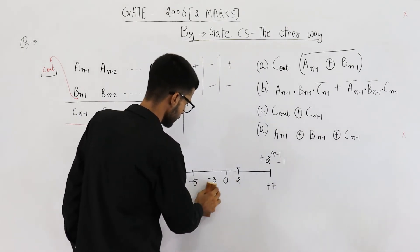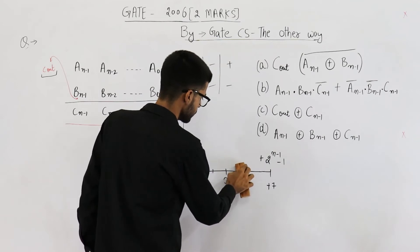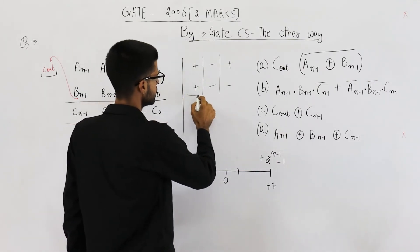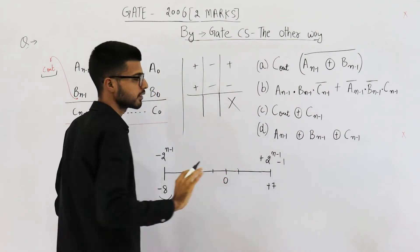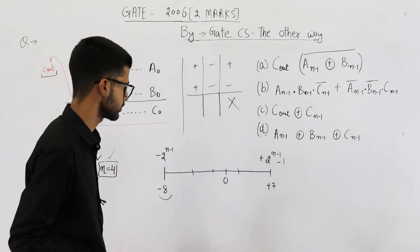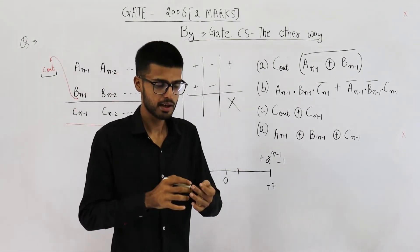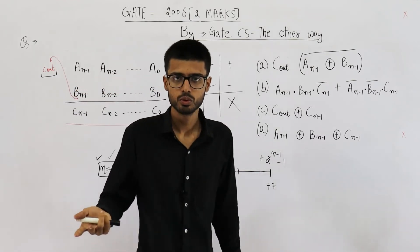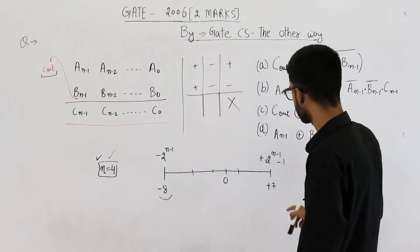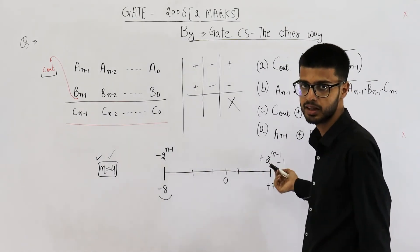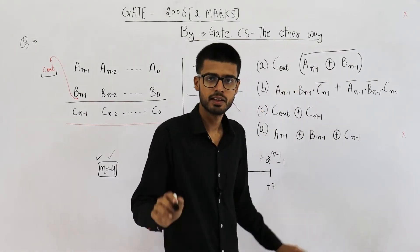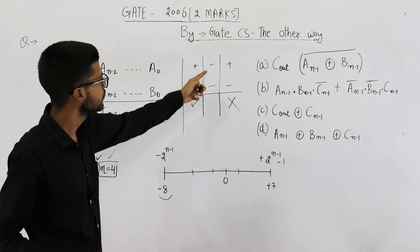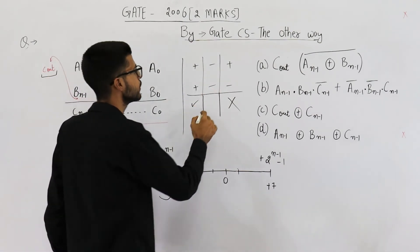Now let us consider the other cases. If both numbers are positive, there is a possibility that overflow is caused — but it is not certain. If both numbers are 1 and 1, then 1 plus 1 is 2, still in range, so no overflow. But if one number is 7 and the other is 4, then 7 plus 4 becomes 11, which is not in range — so there is overflow. Similarly, if both numbers are negative, there is also a chance you get overflow.